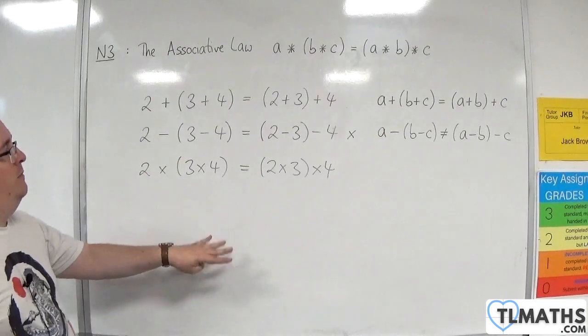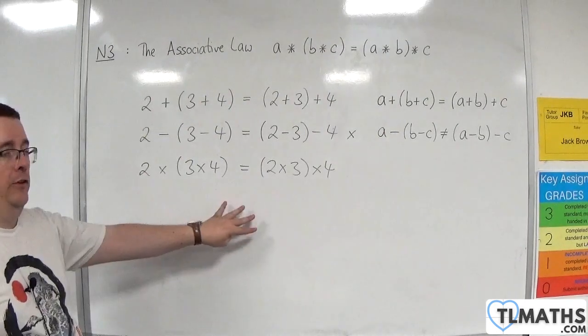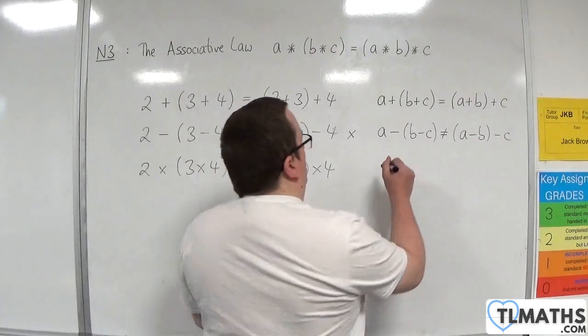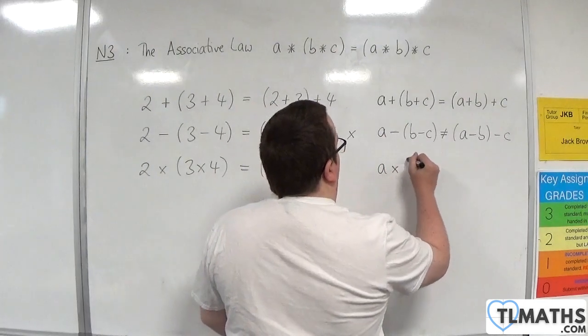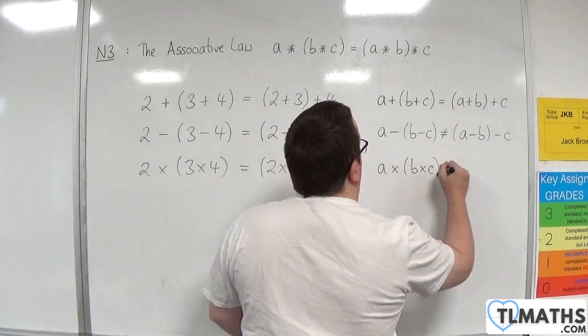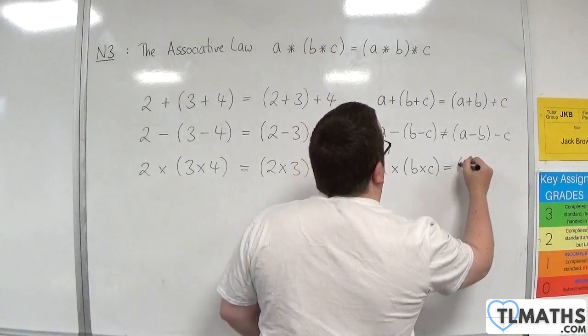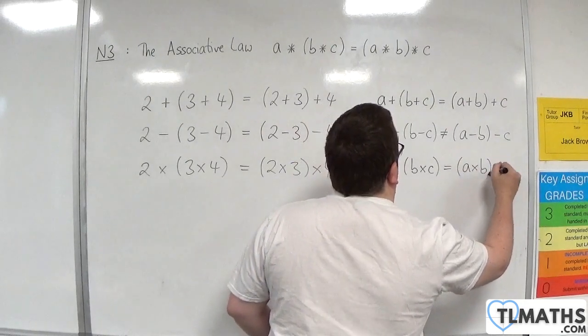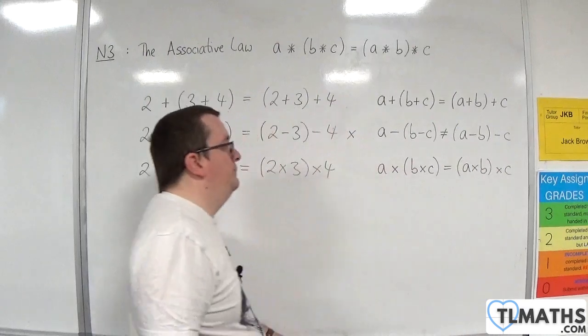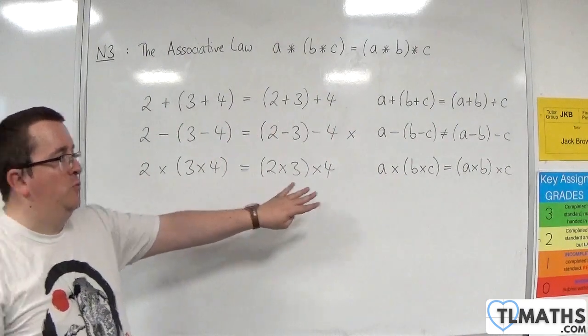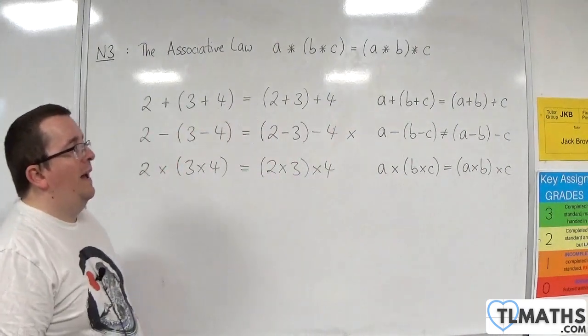Now, multiplication is associative. So A times B times C in a bracket is the same as A times B times C. That's why the A times B is in a bracket there. OK, so that is true.